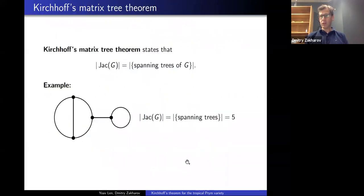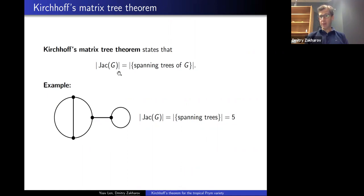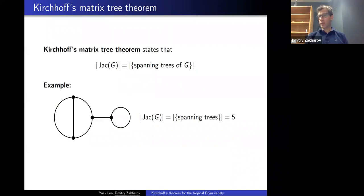A theorem — difficult to attribute because it grew as a collective understanding — is that the Jacobian group of a graph is a finite abelian group, and the number of elements equals the number of spanning trees. For example, this graph has five spanning trees, and its Jacobian is a cyclic group of order five. The Jacobian of a graph is trivial if and only if the graph is a tree, i.e., genus zero — the tropical version of the statement that the Jacobian of a Riemann surface is trivial if and only if it has genus zero.